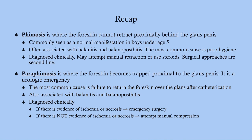To recap: phimosis is where the foreskin cannot retract proximally behind the glans. Physiologic phimosis is normal for boys under age five. It is commonly associated with balanitis and balanopostitis. The most common cause is poor hygiene. Diagnose clinically, attempt manual retraction or use steroids; surgical approaches are second line. Paraphimosis is the opposite — the foreskin becomes trapped proximal to the glans and is an emergency. The most common cause is failure to return the foreskin after catheterization. If ischemia or necrosis is present, go immediately to surgery; otherwise, attempt manual compression. Many patients will ultimately need surgery.